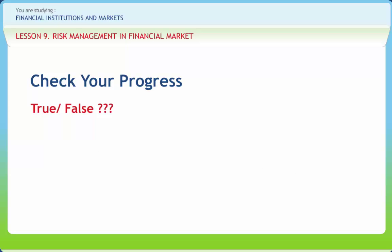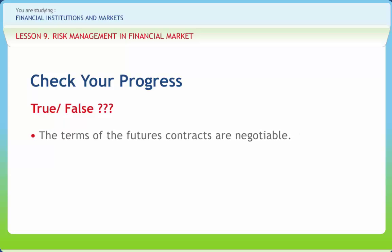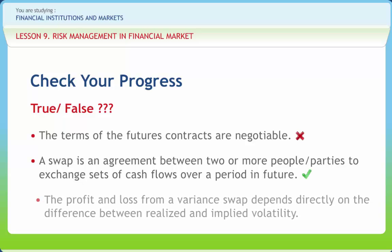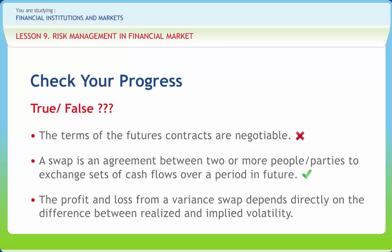Let us check if we have understood the concepts discussed in this lesson. Question 1: The terms of futures contracts are negotiable — Right or Wrong? Wrong. Question 2: A swap is an agreement between two or more parties to exchange sets of cash flows over a period in future — Right or Wrong? Right. Question 3: The profit and loss from a variance swap depends directly on the difference between realized and implied volatility — Right or Wrong? Right.